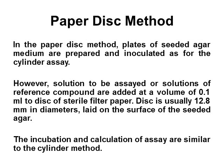In the paper disc method, plates of seeded agar medium are prepared and inoculated as for the cylinder assay. However, solutions to be used for assay or solutions of a reference compound are added at a volume of 0.1 ml to discs of sterile filter paper, usually 12.8 mm in diameter, laid on the surface of the seeded agar. The incubation and calculation of the assay are similar to the cylinder method.